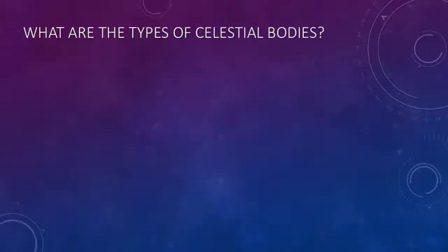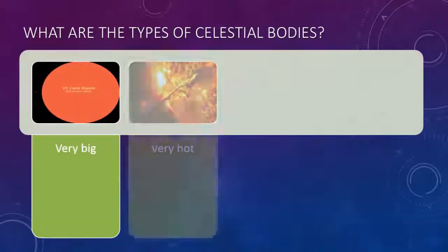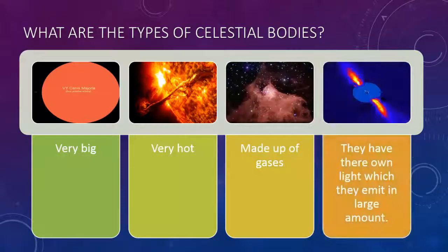What are the types of celestial bodies? Very big, very hot, made up of gases. They have their own light which they emit in large amounts.